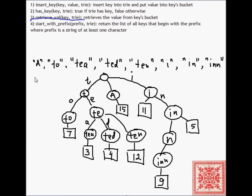Let's consider an example of retrieve_val. Let's say we have key to and we want to retrieve the value associated with that key. Start with the top node, go on t, then go on o, and then check if there is a bucket here and there is a bucket and we return 7, the value of that bucket.